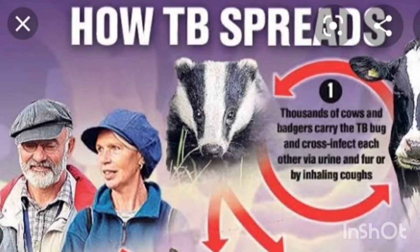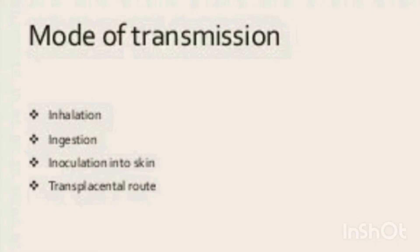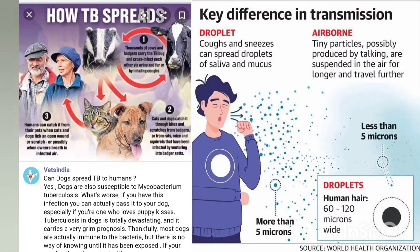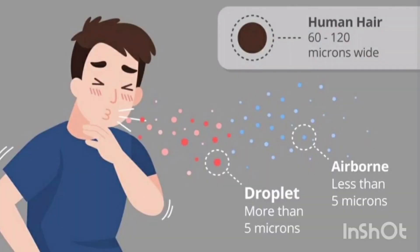The modes of transmission are: inhalation mode, inoculation mode, and ingestion mode. These are the three main routes by which Mycobacterium tuberculosis can enter the body.